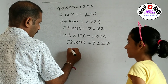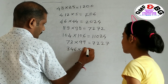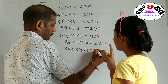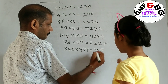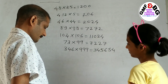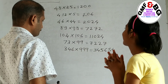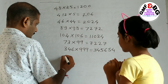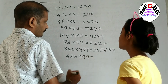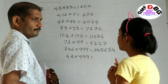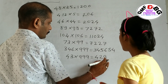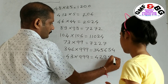Next: 346 × 99 equals 34254. Am I correct? Okay, let's see. Next: 43 × 349 equals 42957.